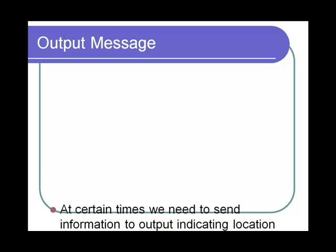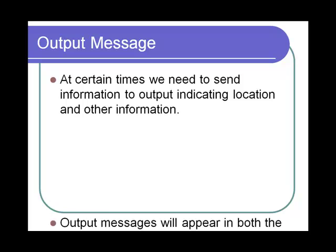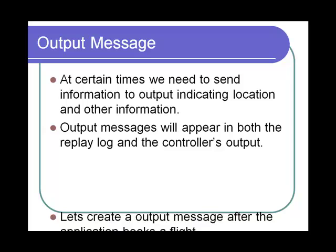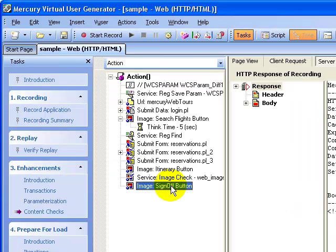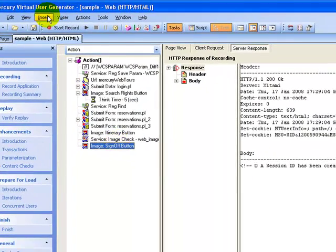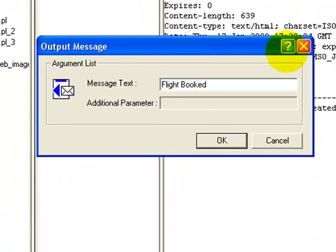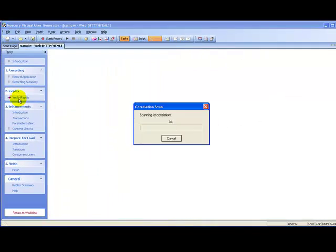Now let's look into output messages. At certain times we need to send information to the output indicating location and other information. Output messages will appear in both the replay log and the controller's output. Let's create an output message after the application logs the flight booking, indicating the booking was done. To insert an output message at the end of the test, I click 'Insert New Step', click 'Output Message', enter the text, and click OK.